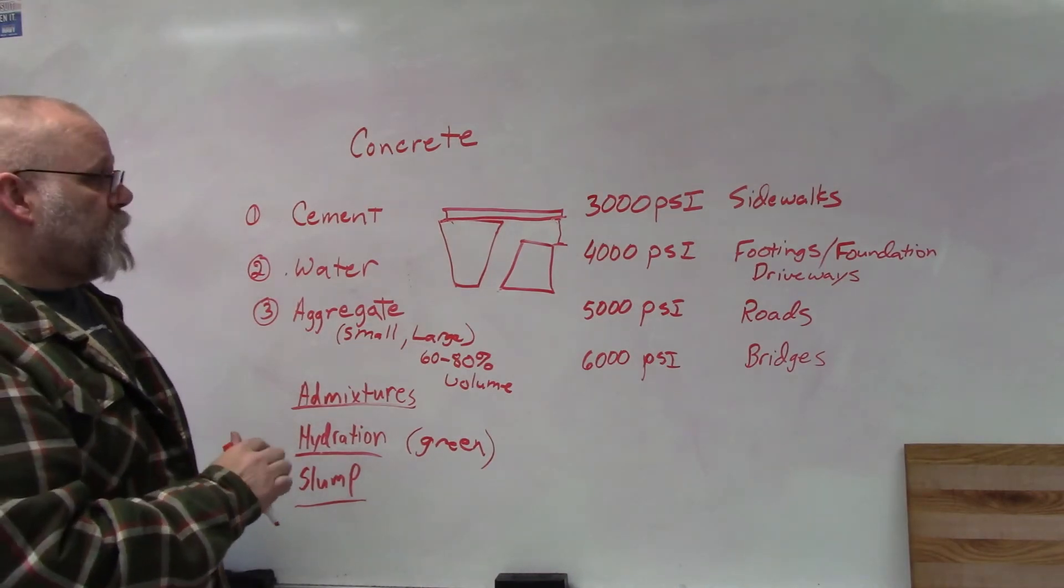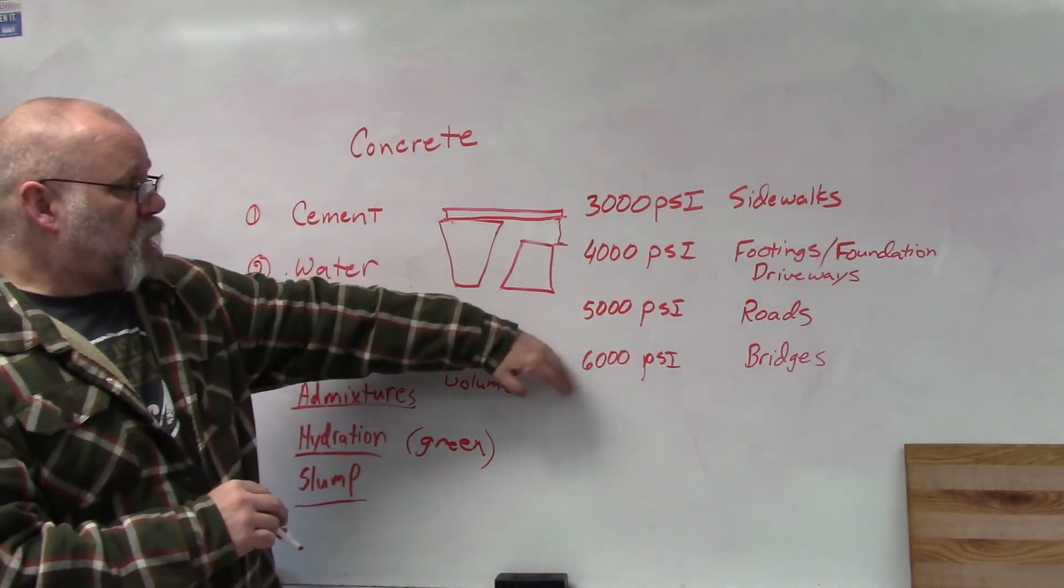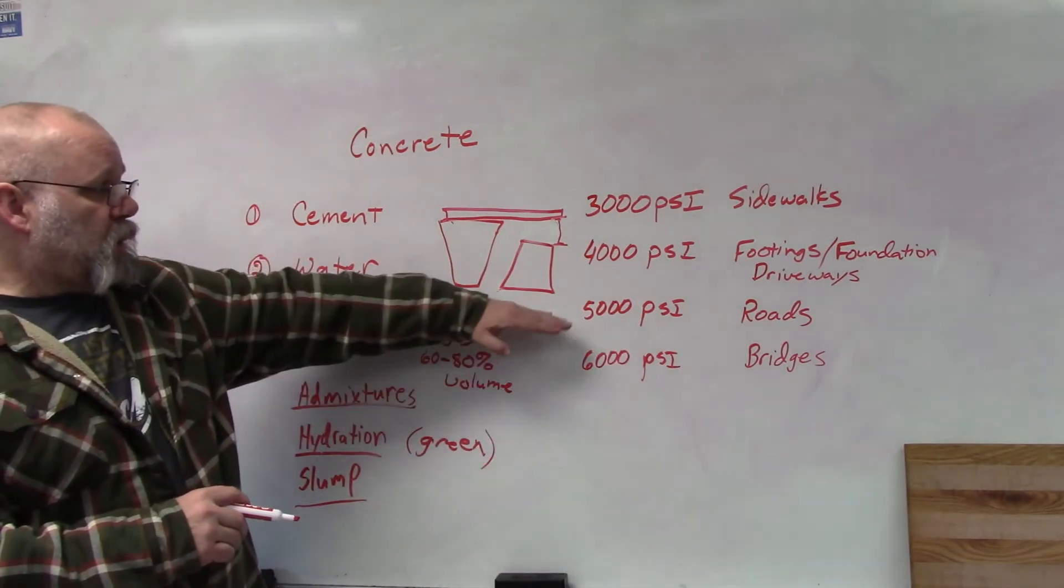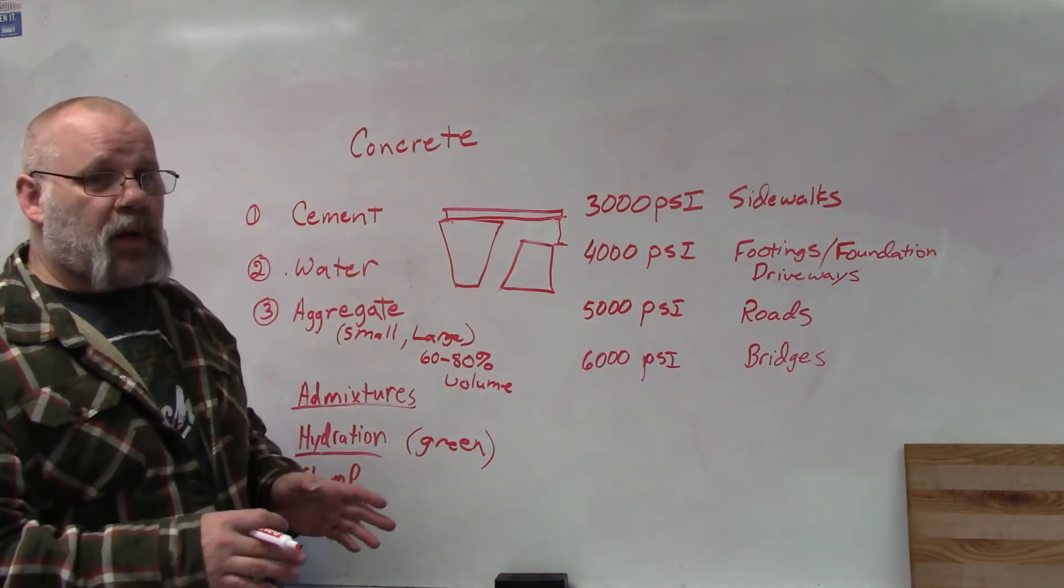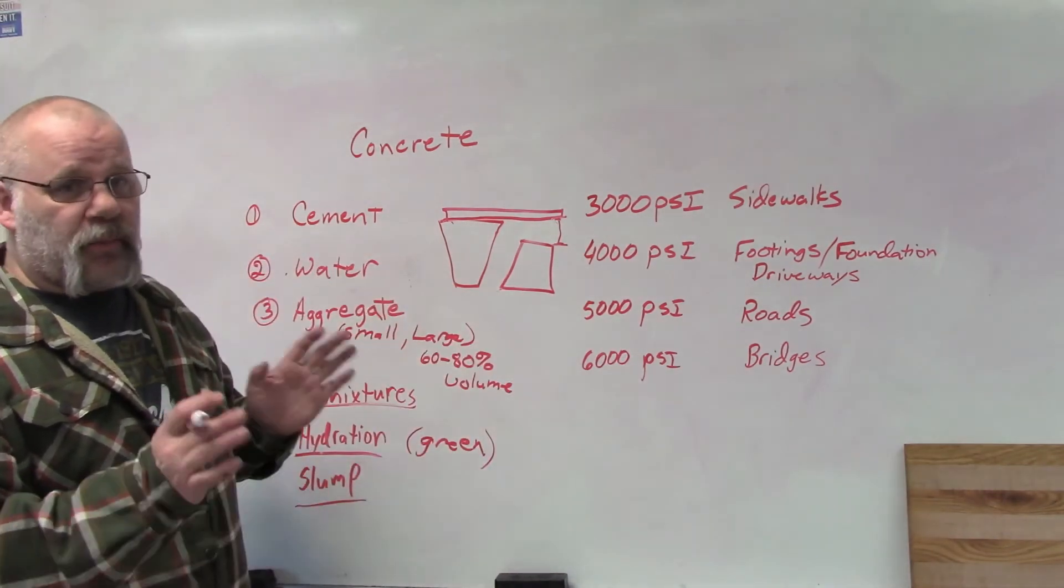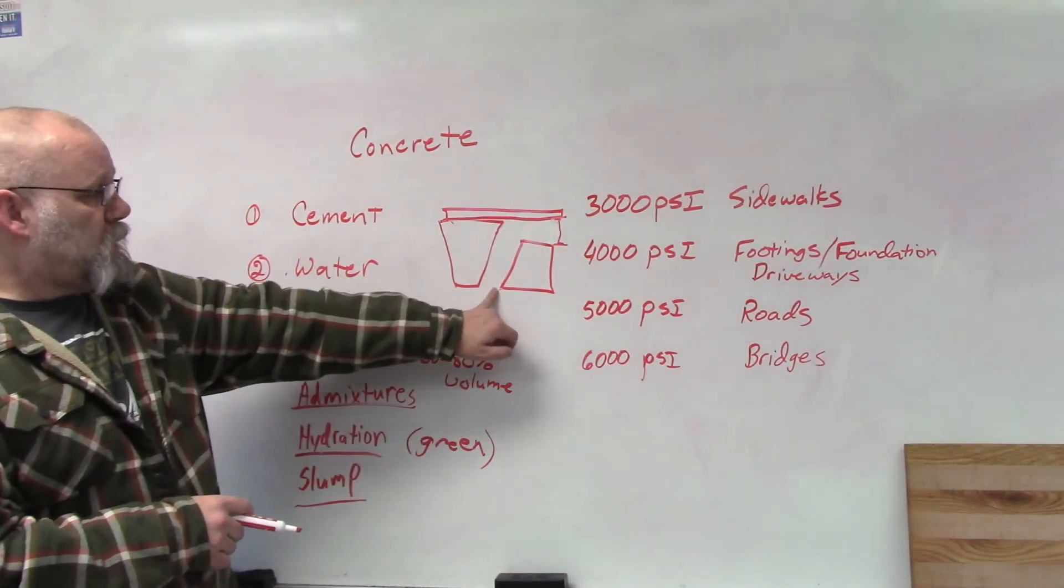So when you're doing some of these roads or bridges, they have certain requirements for the slump. If it doesn't meet the requirements of the slump, they'll just refuse the entire load out of the truck. You got nine or ten yards in a truck, and if it doesn't have the right slump on it, they'll just say nope, I'm not taking it because it doesn't meet our requirements. So the slump is very important if you're going to do roads or bridges to make sure that you have the correct strength when you get done.